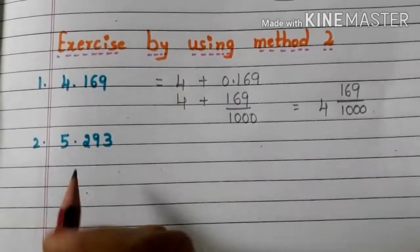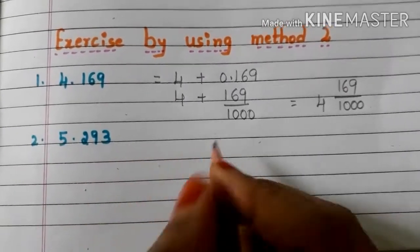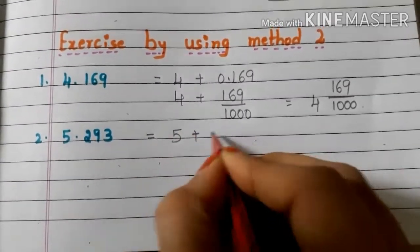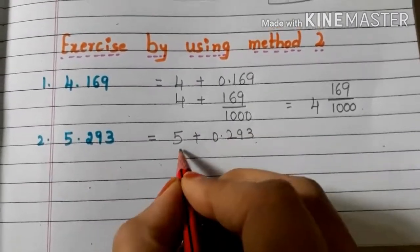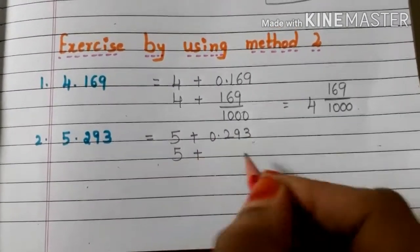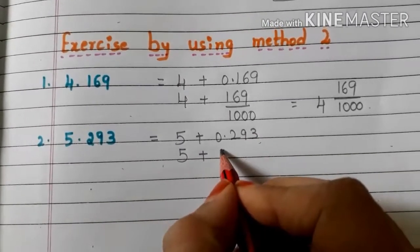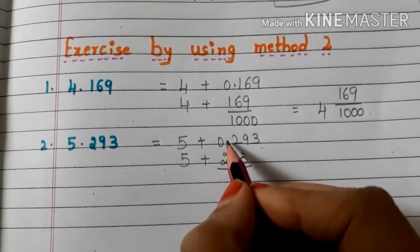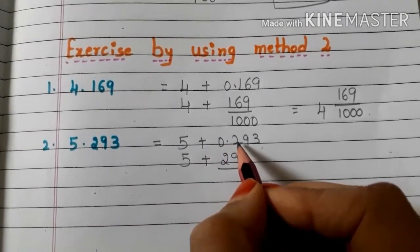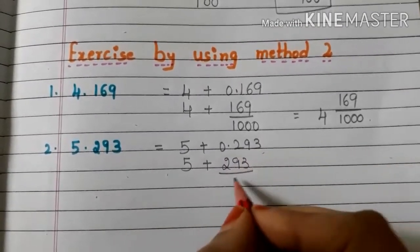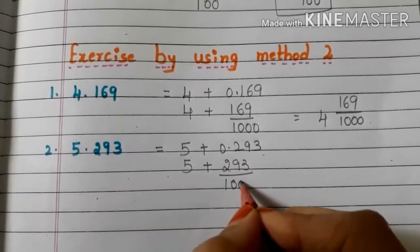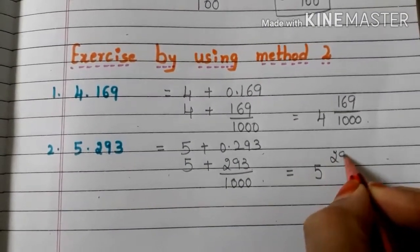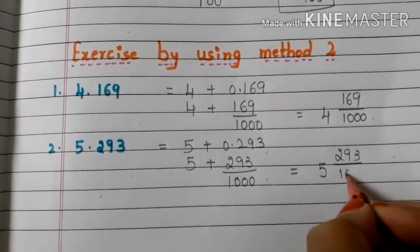Let us go to another decimal: 5.293. We can write 5.293 as 5 plus 0.293. Write 5 as it is, and write this number without any decimals: 293 by — count how many digits are there after the decimal point: 1, 2, 3. Three digits, so we need to write 1000 in the denominator. Now the mixed fraction is 5 and 293 by 1000.